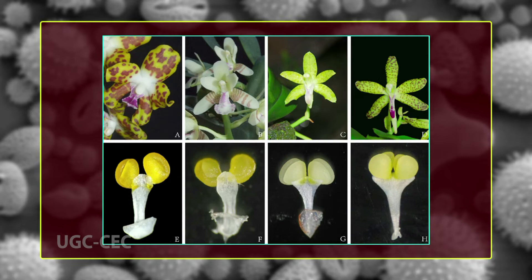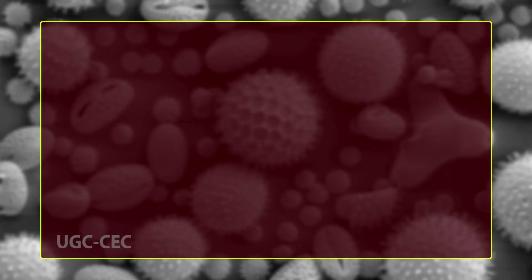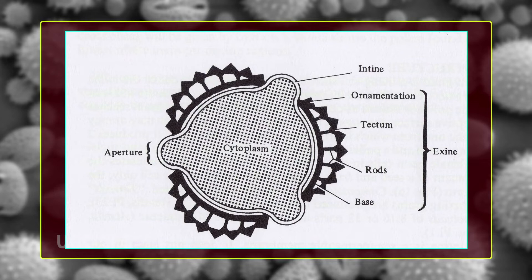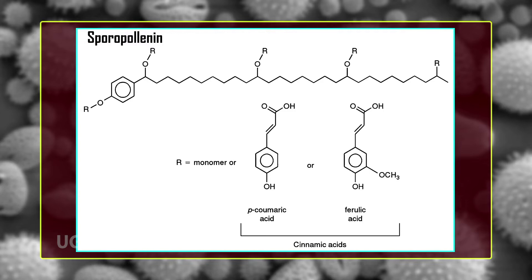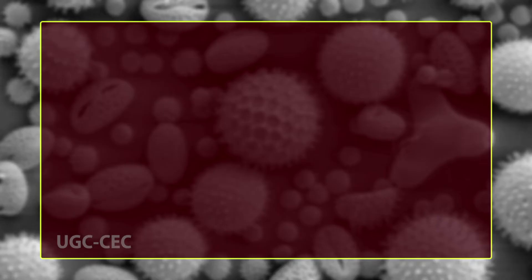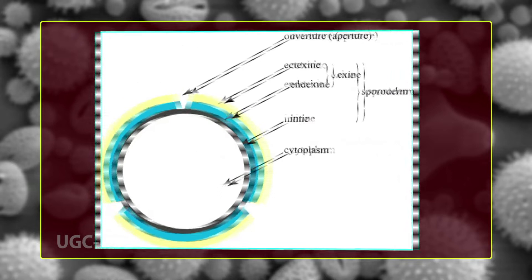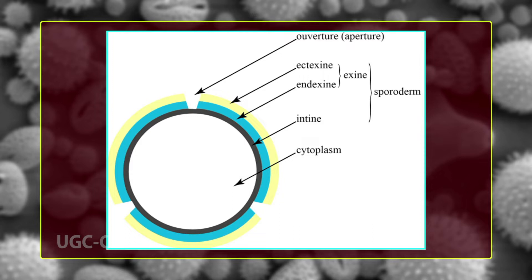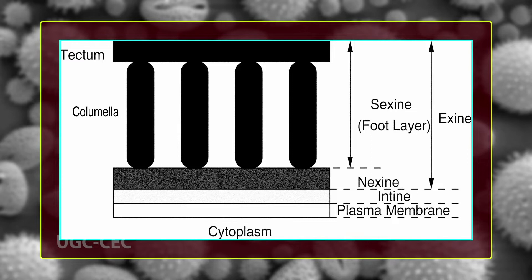The pollen grain wall is made up of two principal layers: the outer exine and the inner intine. The exine is hard and impregnated with sporopollenin, a substance that makes it resistant to decay and enables its preservation in fossil records. The exine is further differentiated into two layers: outer ektexine and inner endexine. The ektexine is further distinguished into a basal foot layer, radially elongated columellae, and a roof-like tectum. In some taxa the columellae may be replaced by a granular middle layer; similarly, in some primitive angiosperms the tectum is lacking.